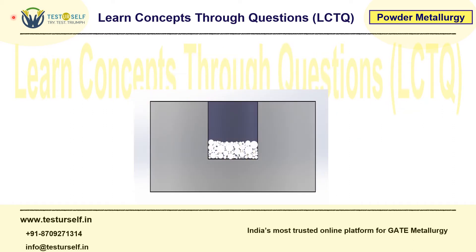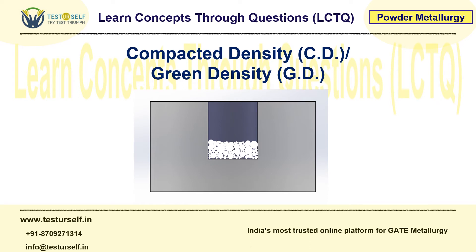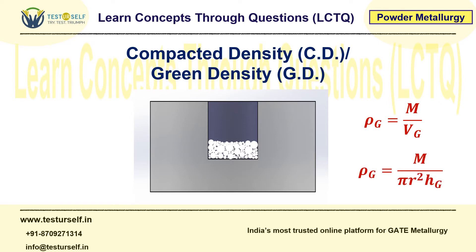Now, if we apply a compaction force in the die, according to compaction mechanisms — micro-forging, fragmentation, and so on — bigger particles fragment into smaller particles, which then densely pack. This density is known as the compacted density, measured just after compaction, and is also called the green density because we haven't sintered it yet. The compact is totally fragile at this stage, with only mechanical bonds and no metallurgical bonds. So rho_G equals m upon V_G, and since radius r is the same, rho_G equals m upon (pi r squared h_G).